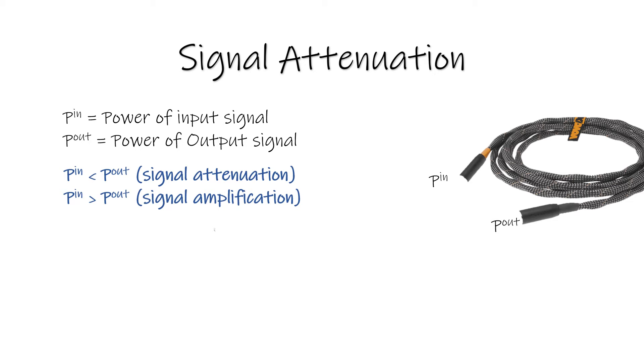We also have the calculation of bels: log Pin by Pout. What is bel? Bel is the logarithmic ratio of output signal power to input signal, which has symbol B.